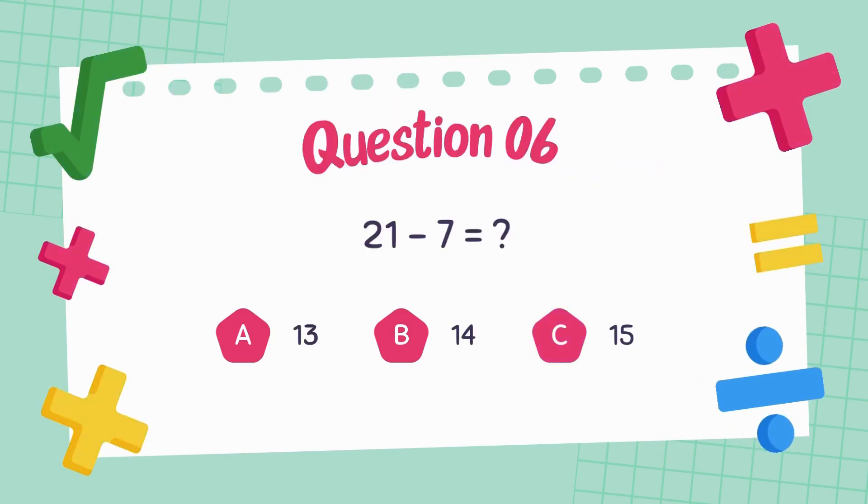Question 6. What is the difference between 21 and 7? Winner, winner, winner, chicken dinner. The right answer is 14.